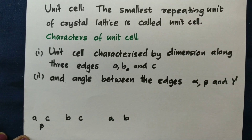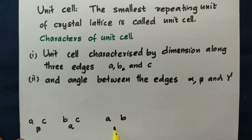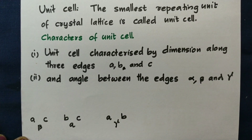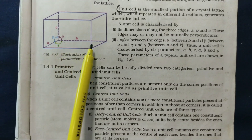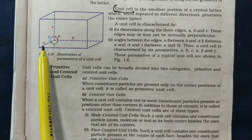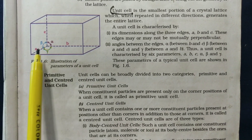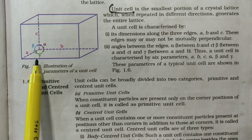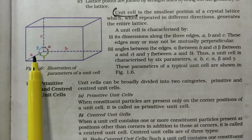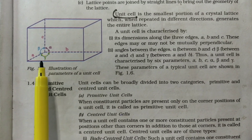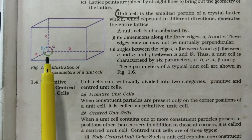The three edge lengths are labeled a, b, and c. The angle between edges b and c is alpha, the angle between a and c is beta, and the angle between a and b is gamma. Together, a, b, c, alpha, beta, and gamma define a unit cell. Different combinations of these lengths and angles give different unit cells.